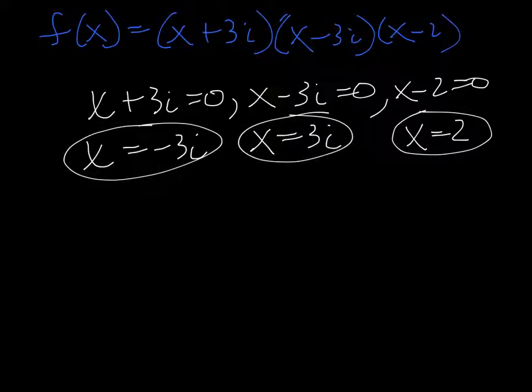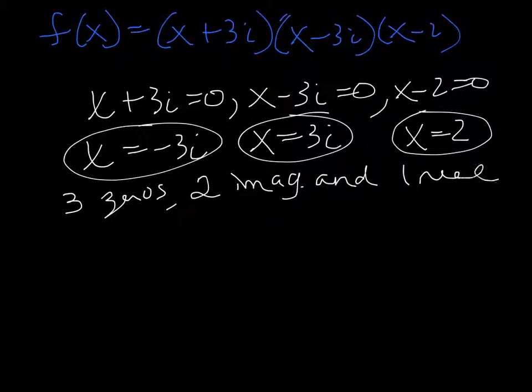A cubic should have three zeros, but two are imaginary. I have two imaginary and one real. So I have to get three answers out of a cubic, but they don't all have to be real ones.